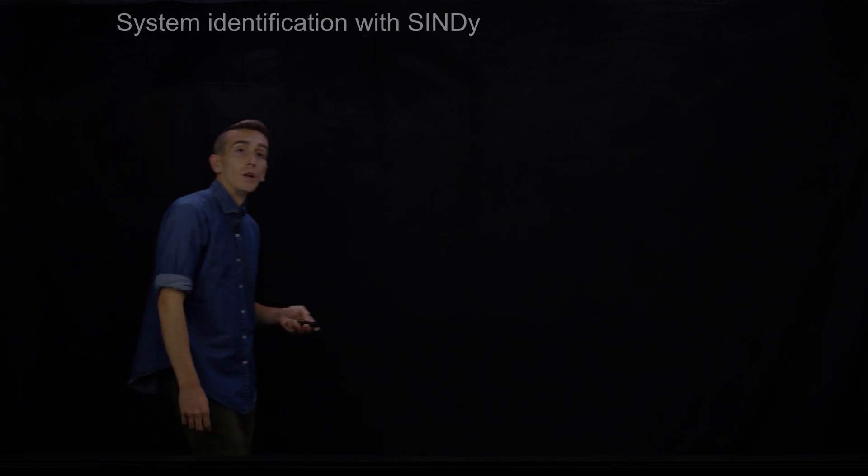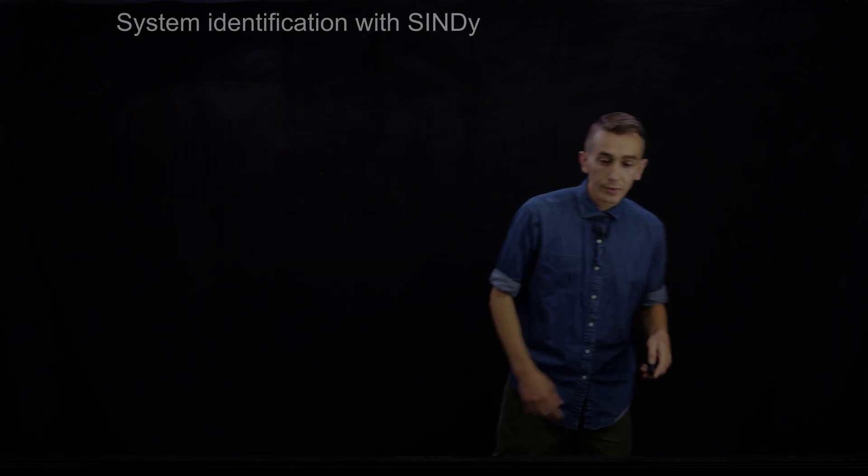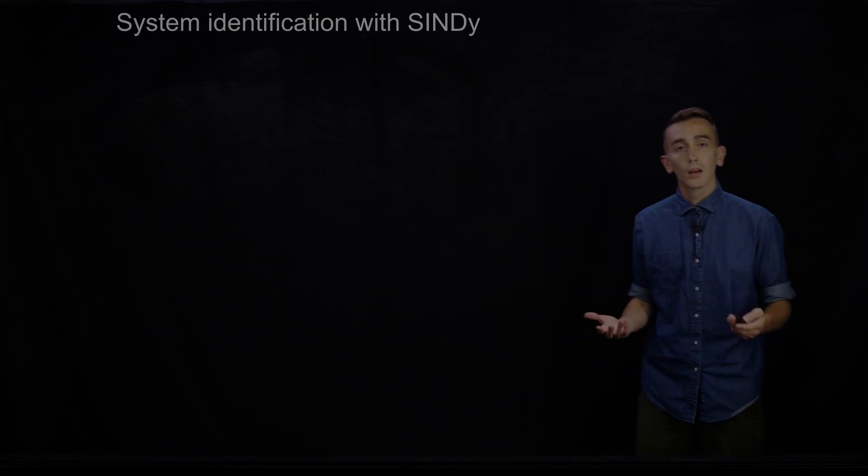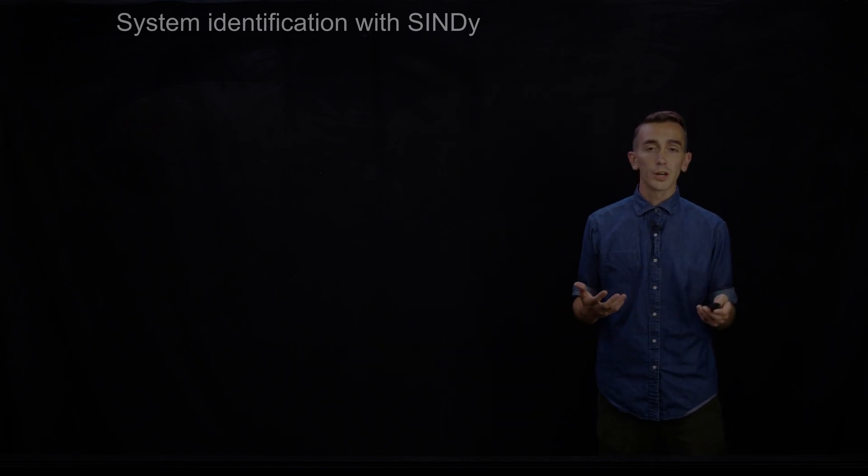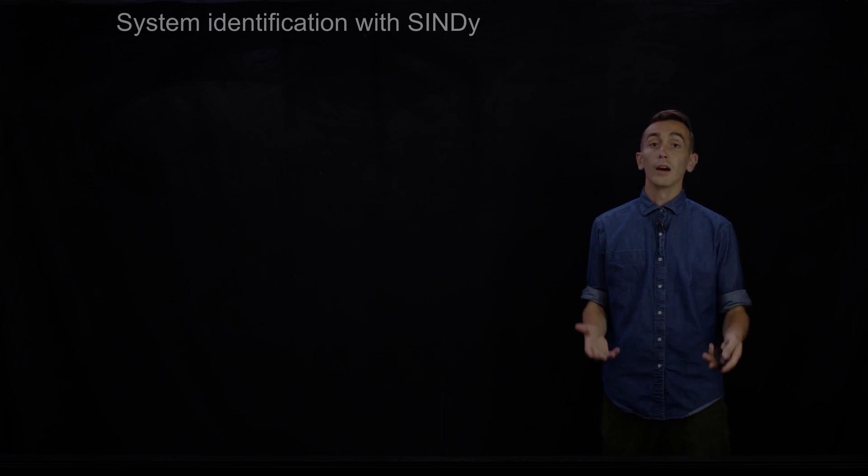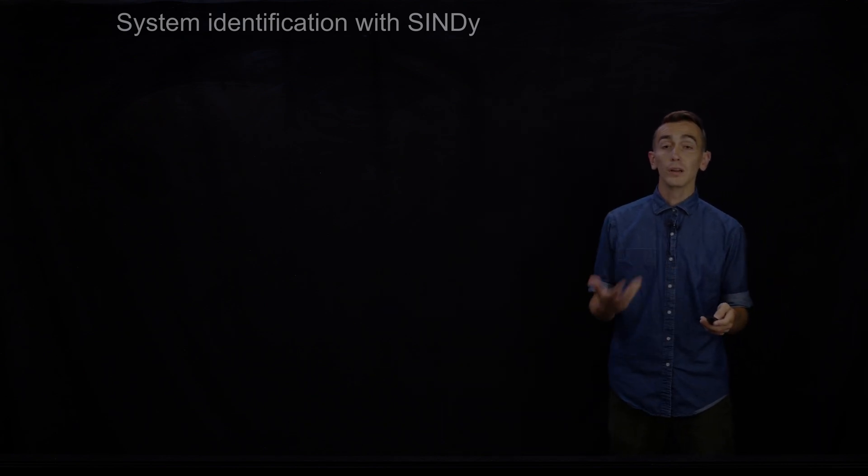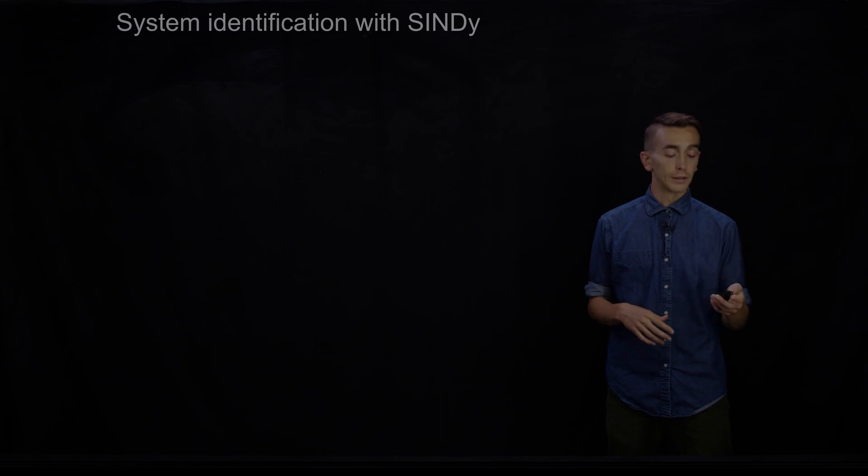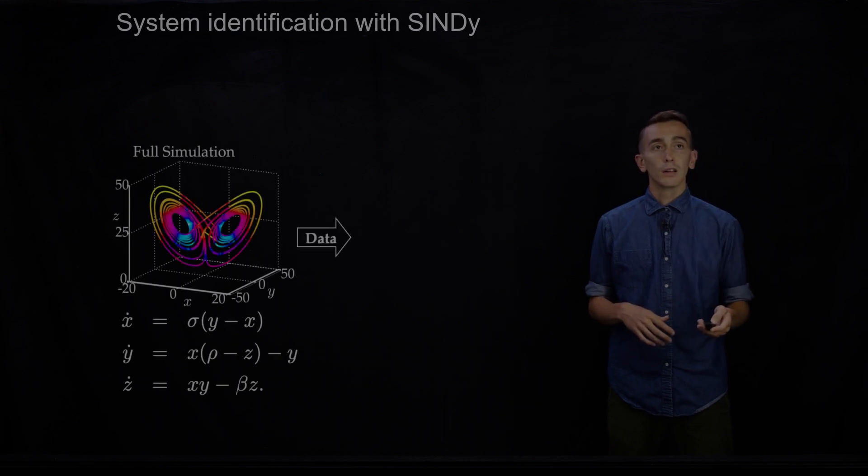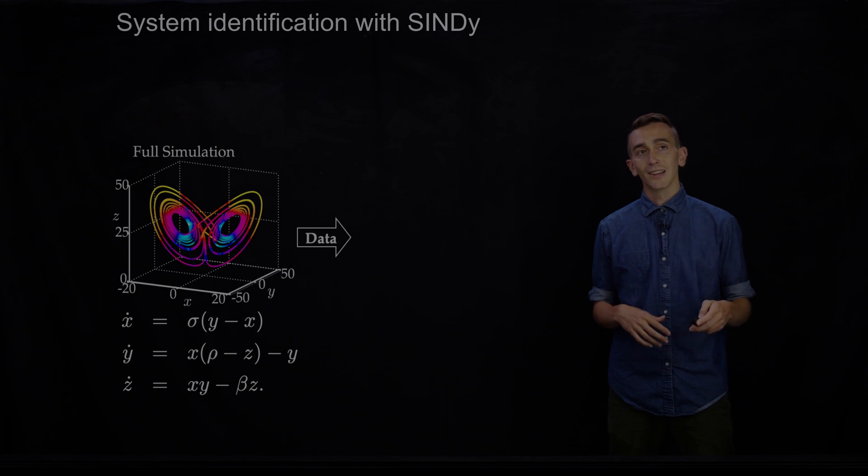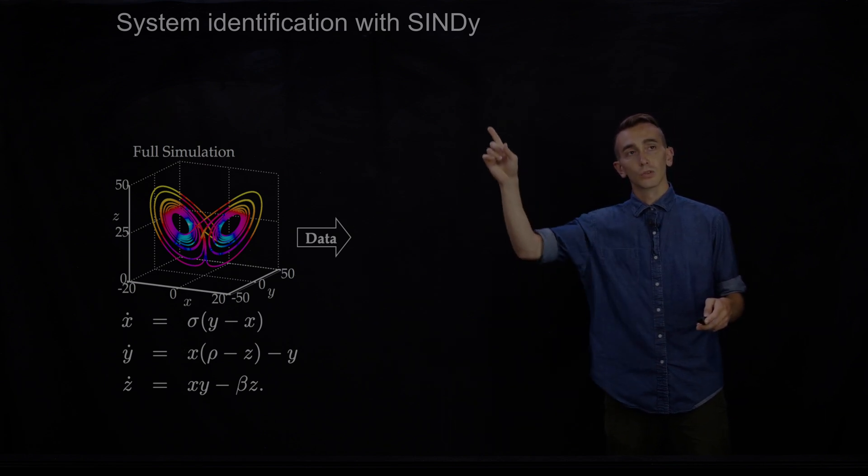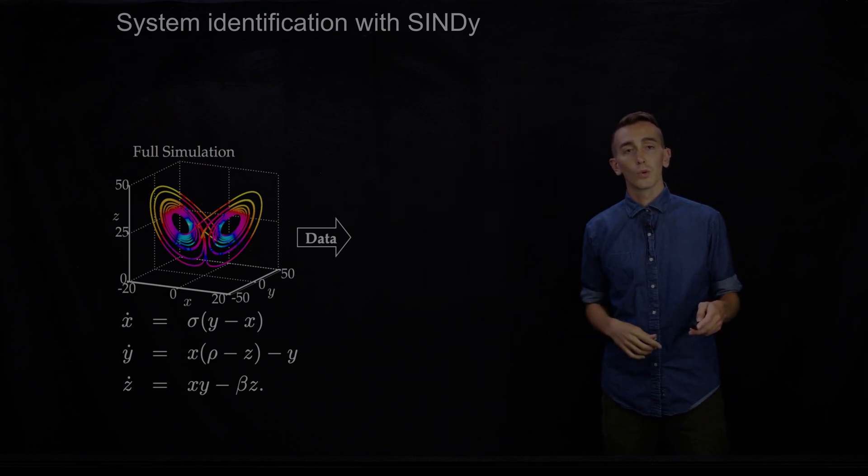So one of the things you might do to find these surrogate models is just take a big bunch of measurements from an experimental device and then use system identification methods to figure out how is that data evolving in time by building a system of ODEs or PDEs for how that data is evolving. So we're going to use this. I'm going to show you how the sparse identification of nonlinear dynamics or SINDy method works.